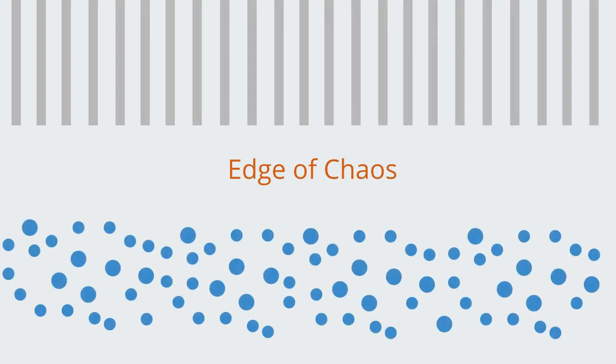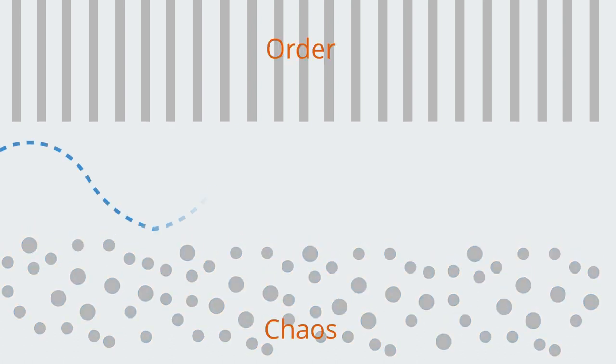The term edge of chaos is used to denote a phase transition space between order and disorder that is hypothesized to exist within a wide variety of systems. This transition zone between the two regimes is known as the edge of chaos.